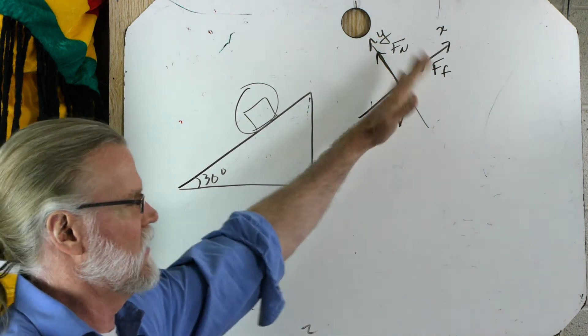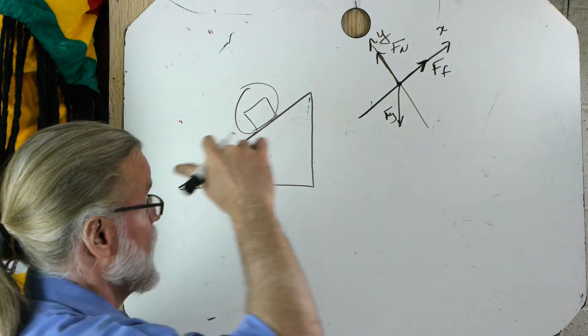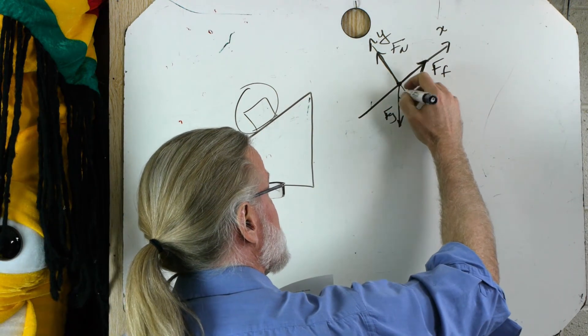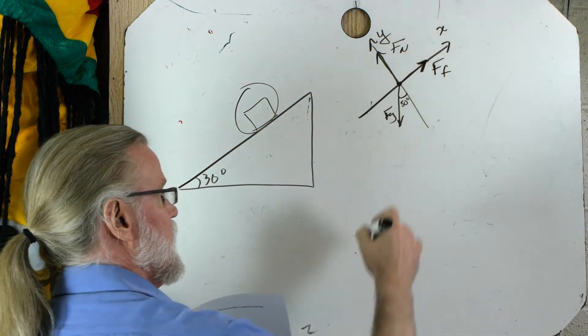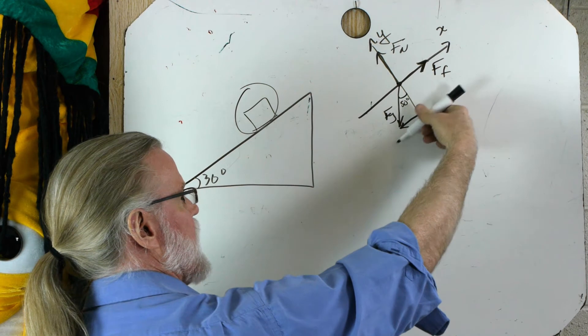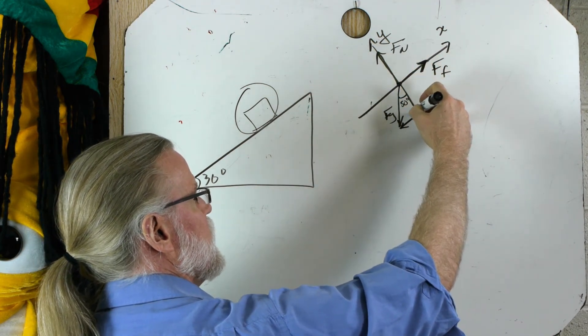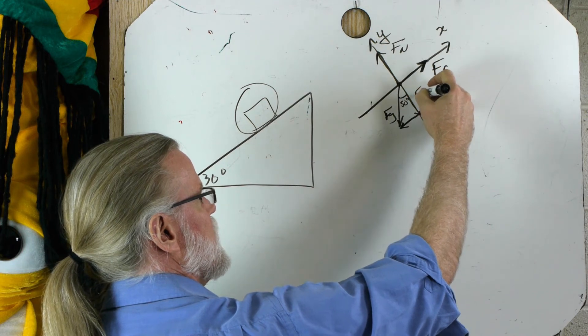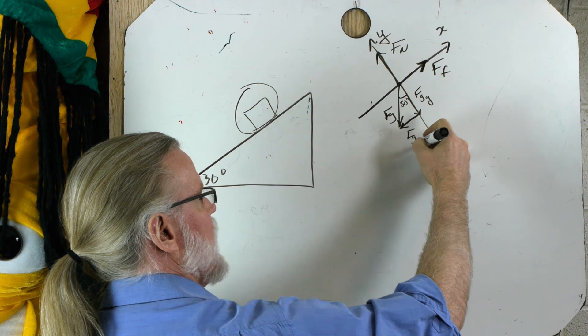The key really is to tilt the axes and to break your gravity vector. Here's 30 degrees. Your gravity force vector into its x component. So I drew an x component parallel with the ramp and a y component along the y axis. This will be fgy. This will be fgx.